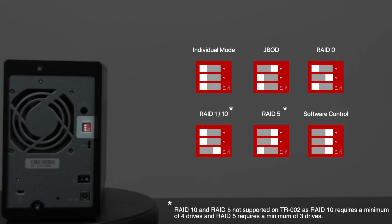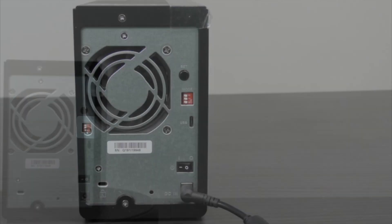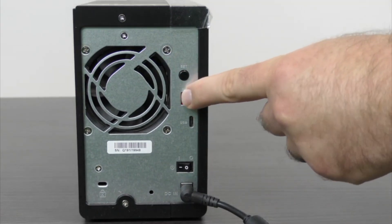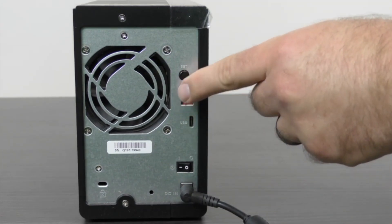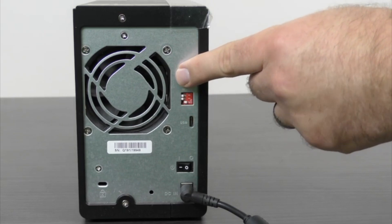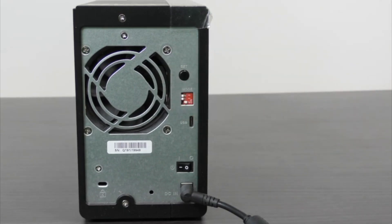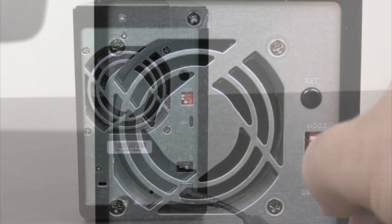You can choose your RAID with the hardware RAID controller. To use the hardware RAID controller, simply set the three switches to the appropriate configuration for the RAID of your choosing, then hold the set button for three seconds. You should hear a beep when you've held the button long enough. Keep in mind that when you set the RAID, any previously stored data is wiped.